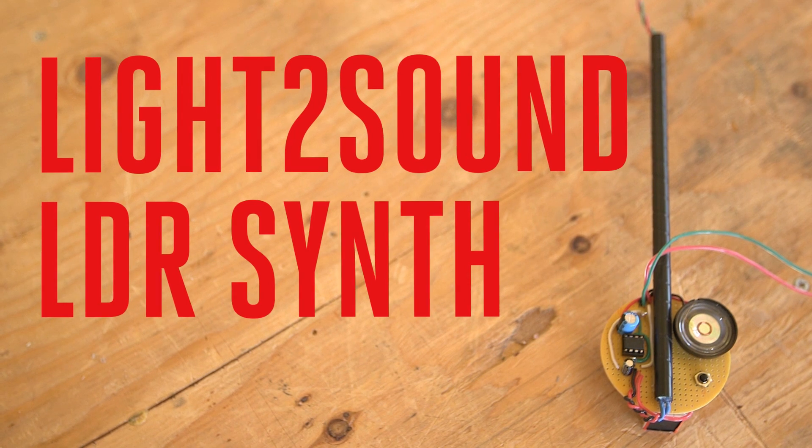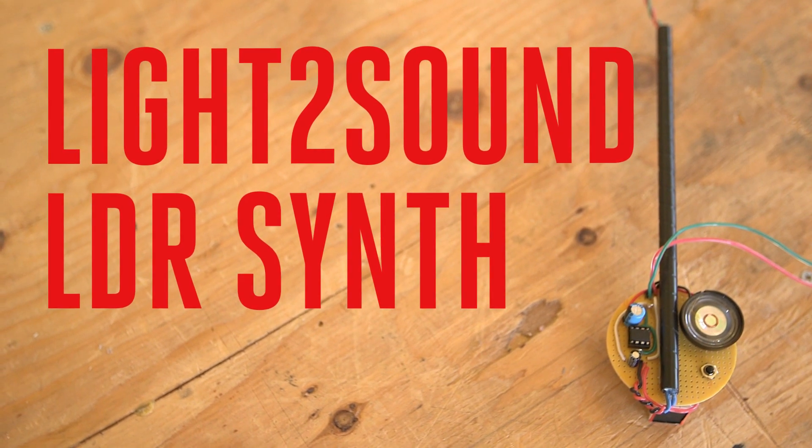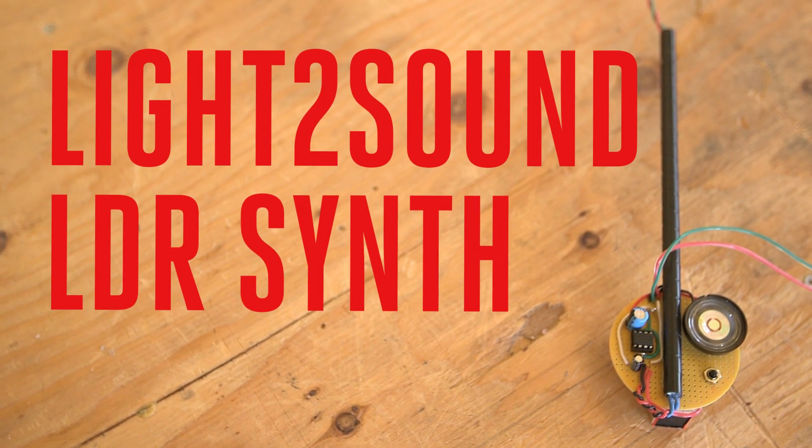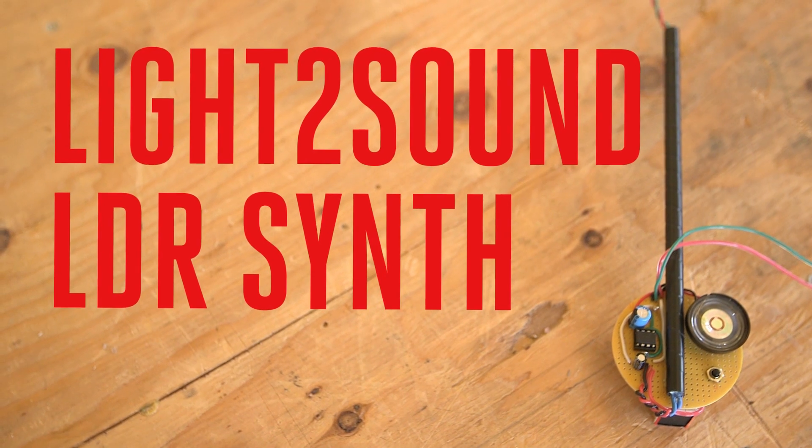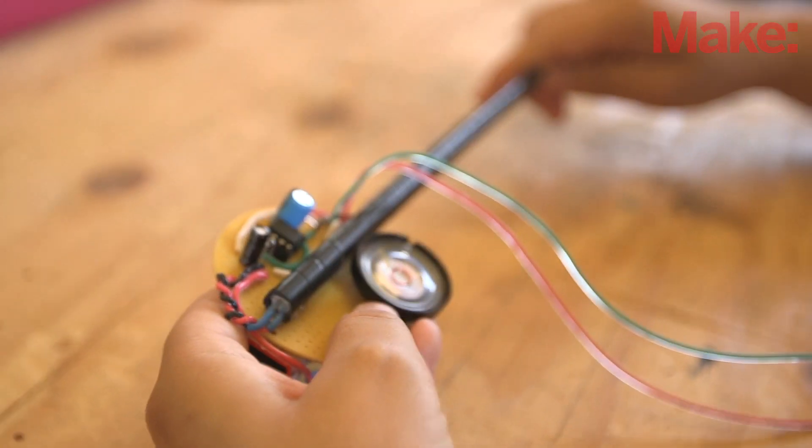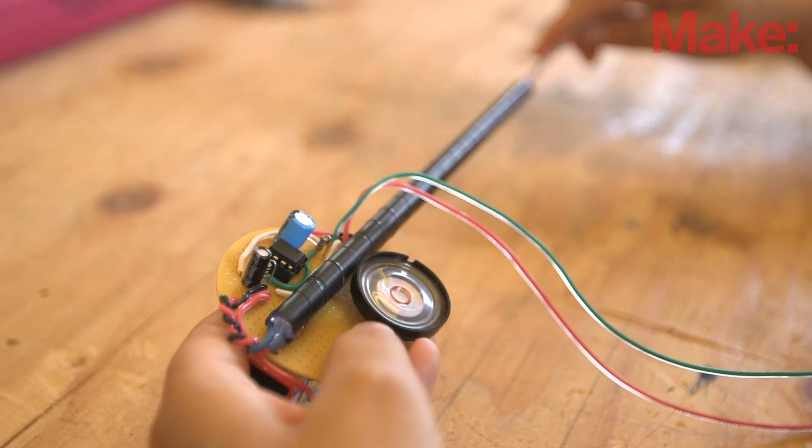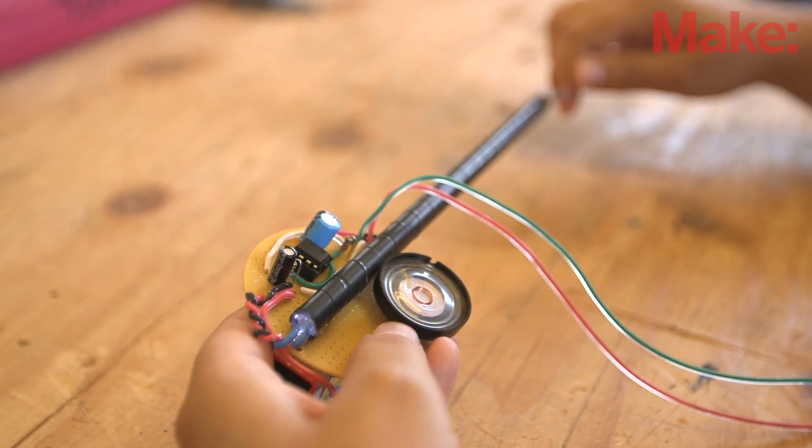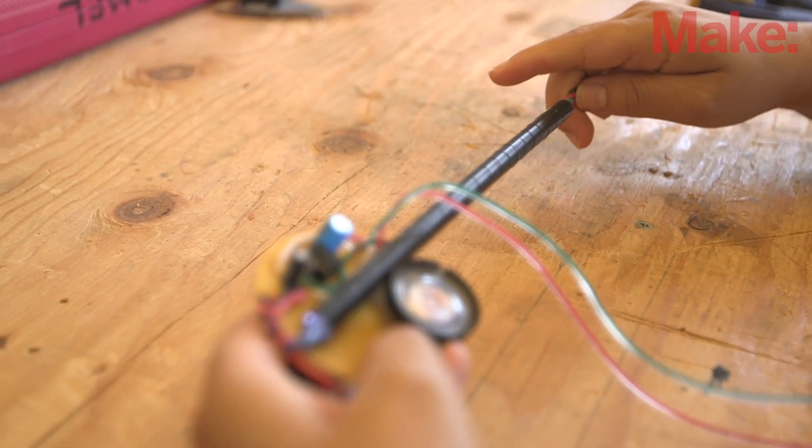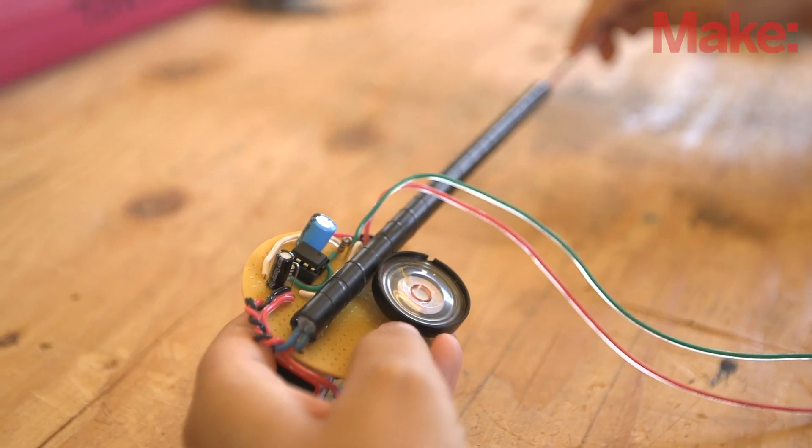The light-to-sound LDR synth is built around the venerable 555 timer, the brains of other classic weekend projects such as the Light Theremin and the Drawdio Music Pencil. An LED shines light while a light-dependent resistor or LDR, otherwise known as a photoresistor, varies the resistance to that light, altering the pitch of sound output through the speaker.